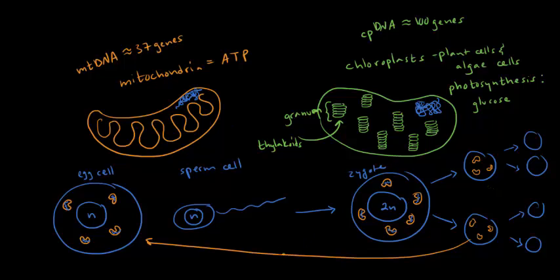And so this brings us to the concept of maternal inheritance. Maternal inheritance is basically exactly the way it sounds. It's inheritance that happens only from the maternal line, or only from the egg cell. So right here, we're showing that the mitochondria that this organism will eventually have originates from the mitochondria that came only from the egg cell and not from the sperm cell. And therefore it exhibits maternal inheritance.